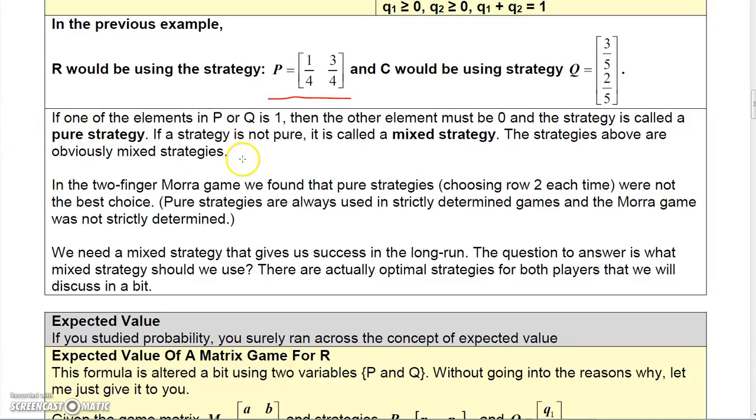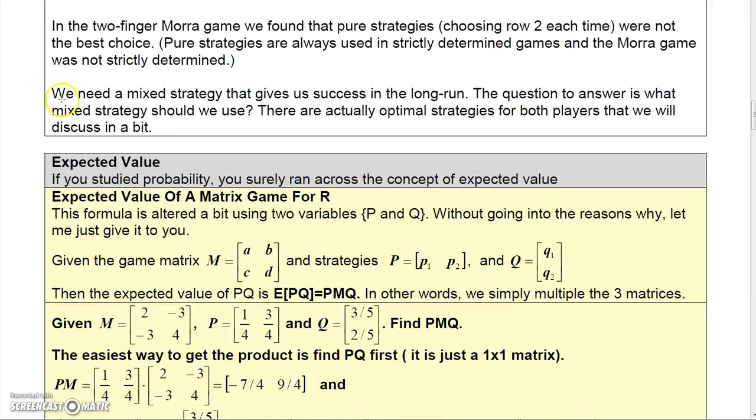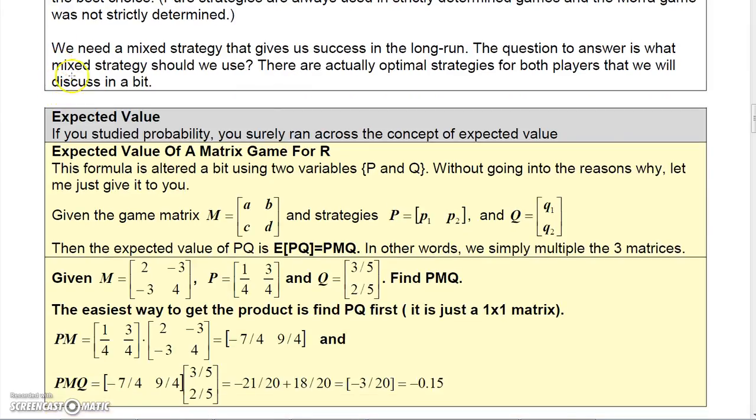Now I know this is getting a little strange here, but just hear it out. If one of the elements in P or Q is one, then the other element must be zero. Because the sum of the row and the sum of the column have to add up to one. In this game, we found that pure strategies, choosing row two each time, were not the best choice. Pure strategies are always used in strictly determined games. But this game is not strictly determined. So we need a mixed strategy that gives us success in the long run.